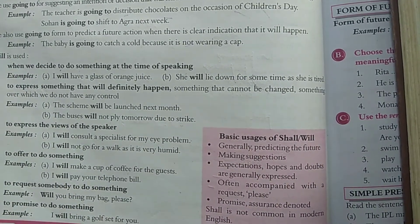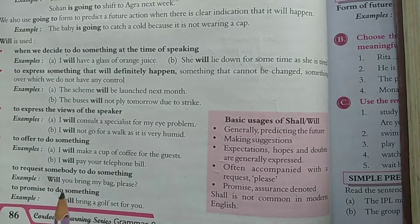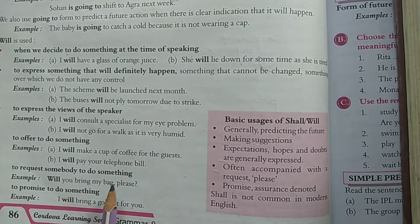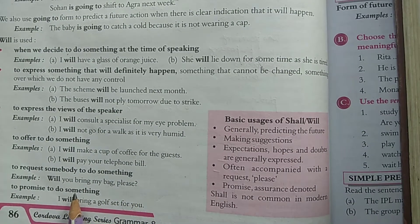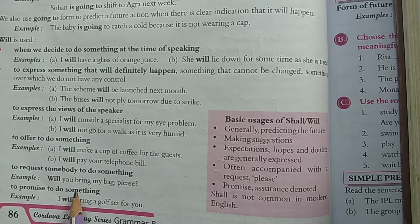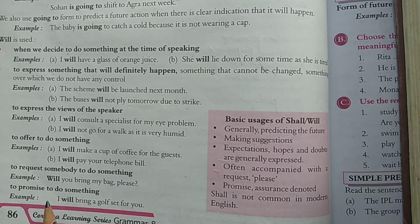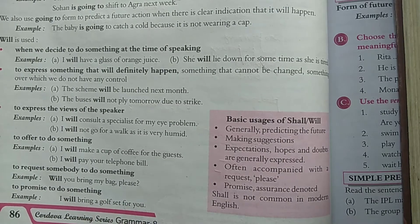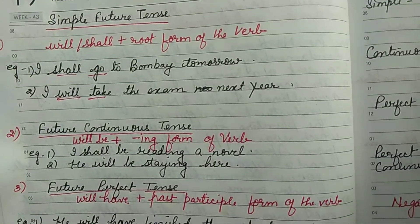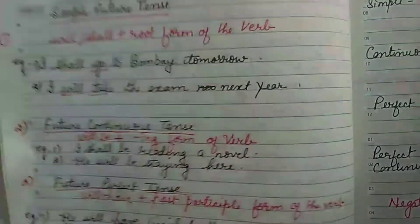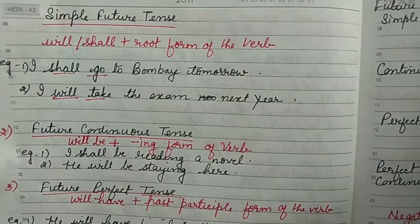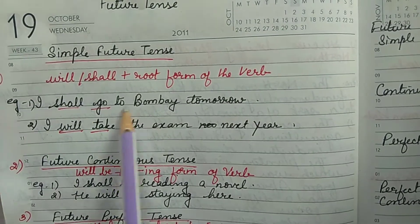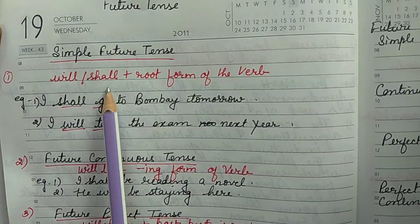We also use 'will' to request somebody to do something: 'Will you bring my bag, please?' When making a request, we apply the word 'will.' We can also use it to promise to do something: 'I will bring a gift for you.' These are the various areas where 'will' can be used.